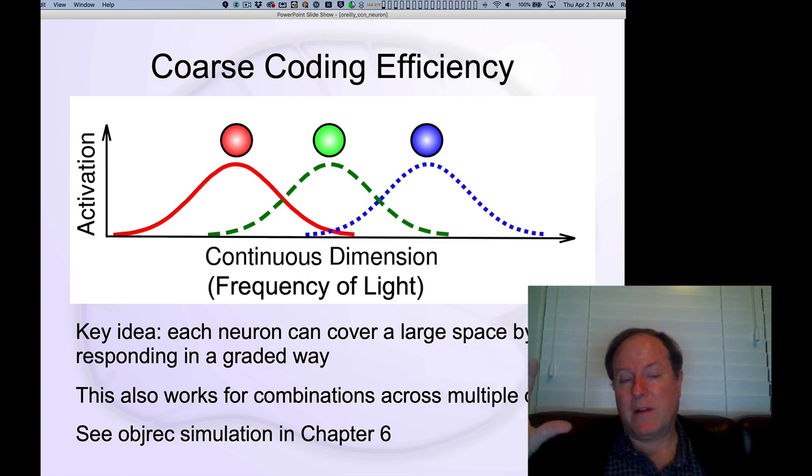And so that graded response allows a much more efficient encoding of information. We only have three different detectors in our retina. We have a very long wavelength, a medium wavelength, which is so the long wavelength is red, medium wavelength is green. And in fact, interestingly, if you look at the real data, these things are really, really close together in the frequency dimension. And then you have a short wavelength, which is the blue. And so with only three, you can actually encode an entire continuous dimension.